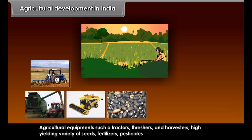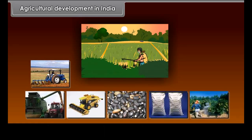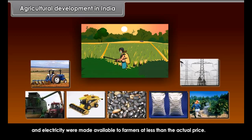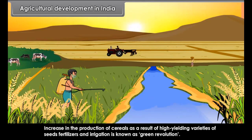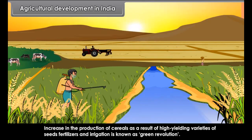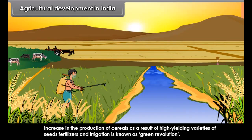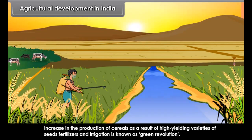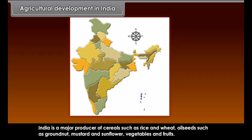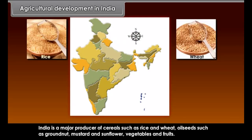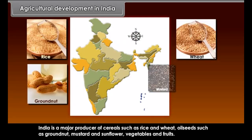Agricultural equipment such as tractors, threshers and harvesters, high yielding variety of seeds, fertilizers, pesticides and electricity were made available to farmers at less than the actual price. The Green Revolution was implemented to improve agricultural production. Increase in the production of cereals as a result of high yielding varieties of seeds, fertilizers and irrigation is known as the Green Revolution.